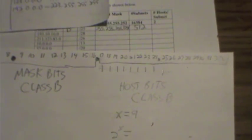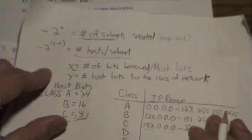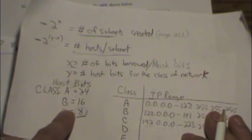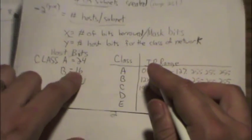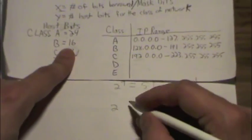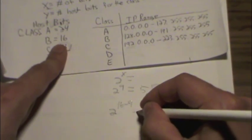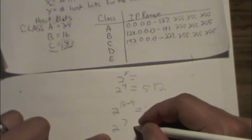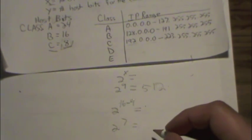The number of hosts per subnet we solve in the same manner: 2 to the y minus x. What was y? Well, we're dealing with a Class B address, so y is 16. We have 2 to the 16th minus 9, because y we got number of host bits. Number of host bits for a Class B is 16. 2 to the 16th minus x, which is 9. And it looks like that gives us 2 to the 7th. And 2 to the 7th is 128.